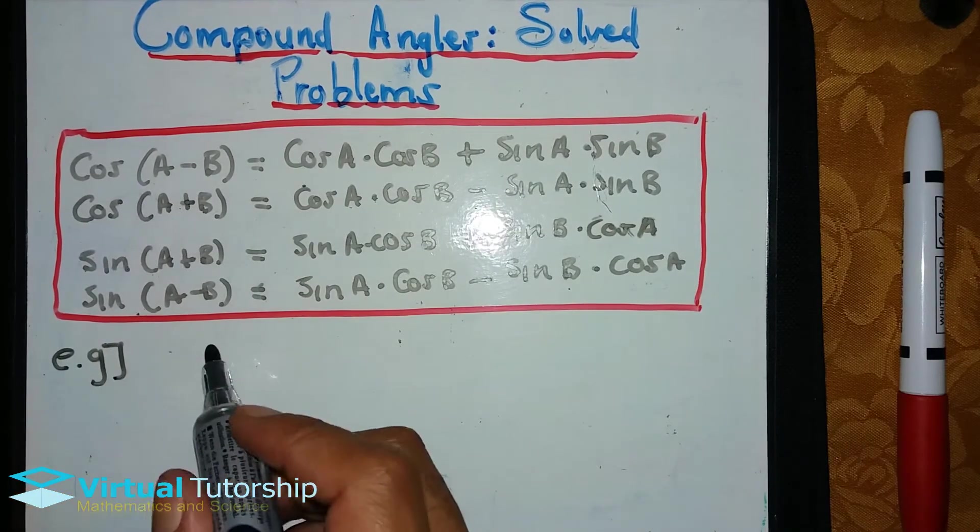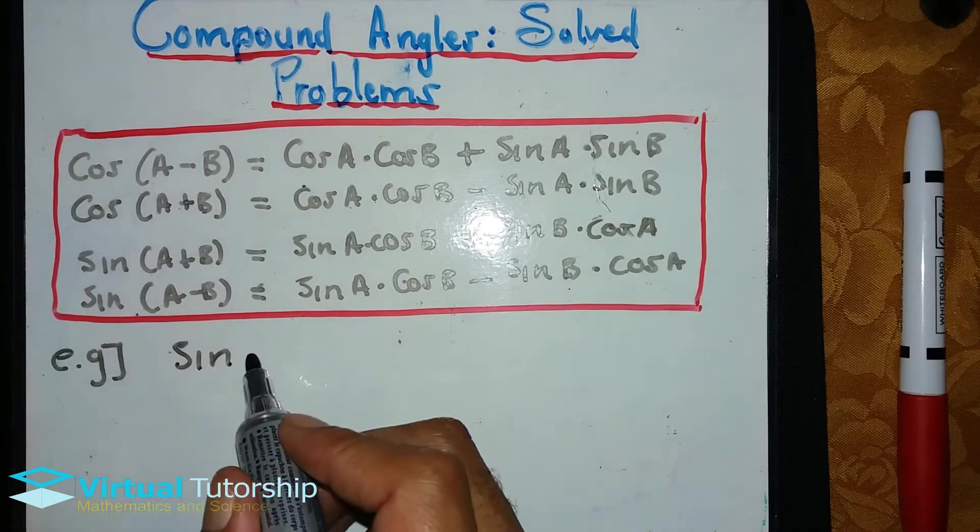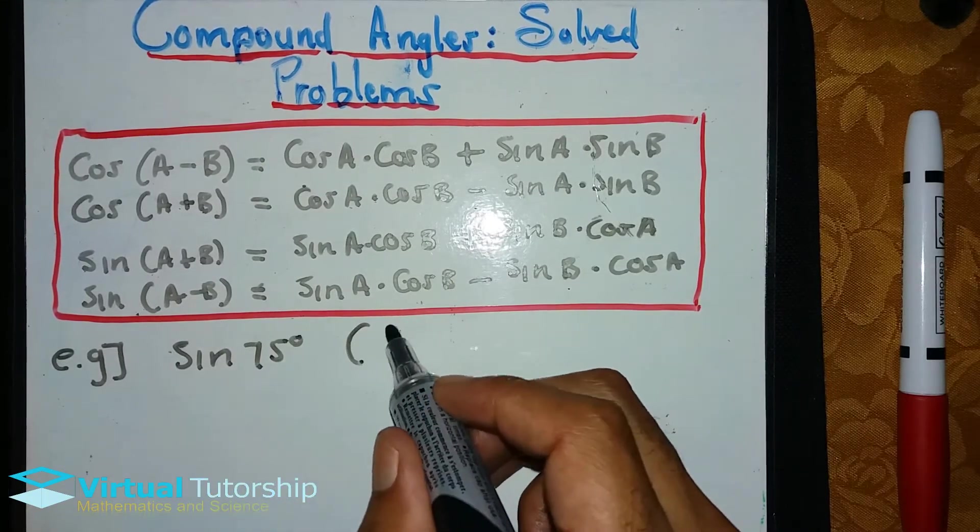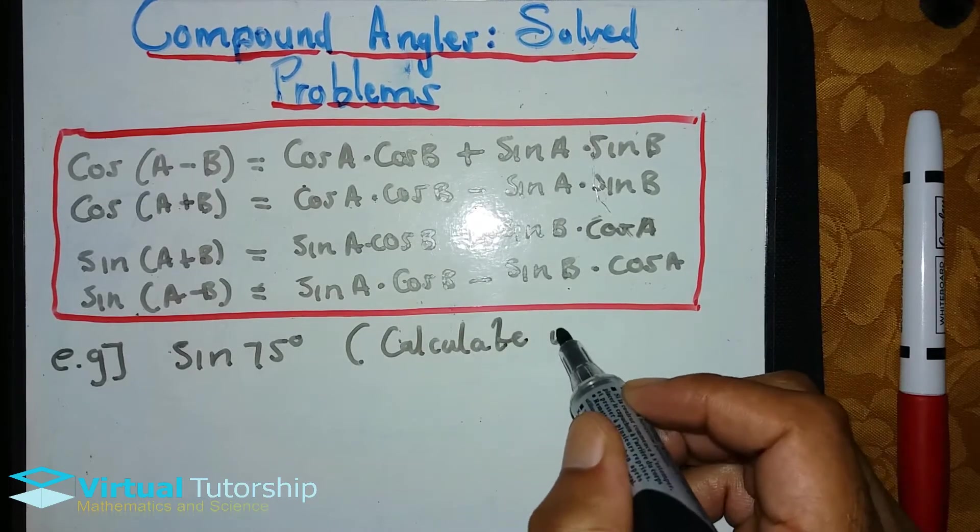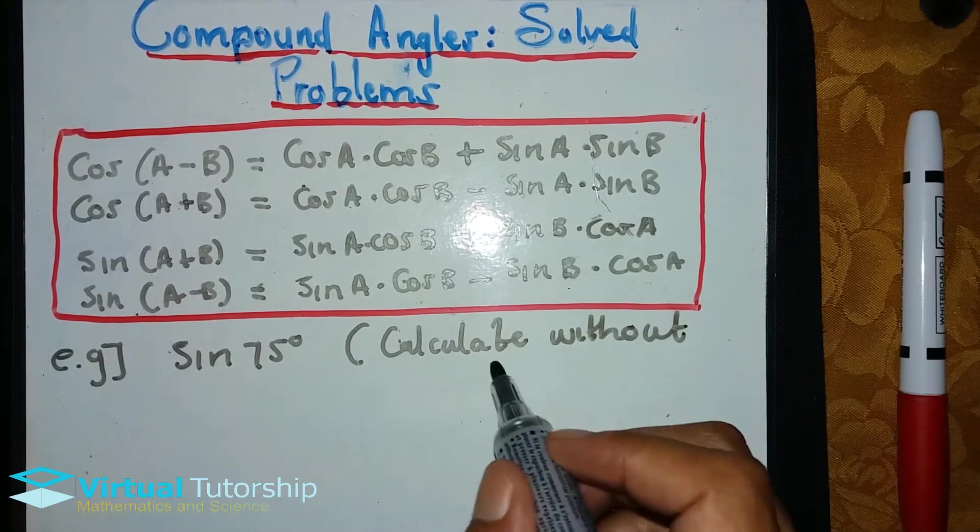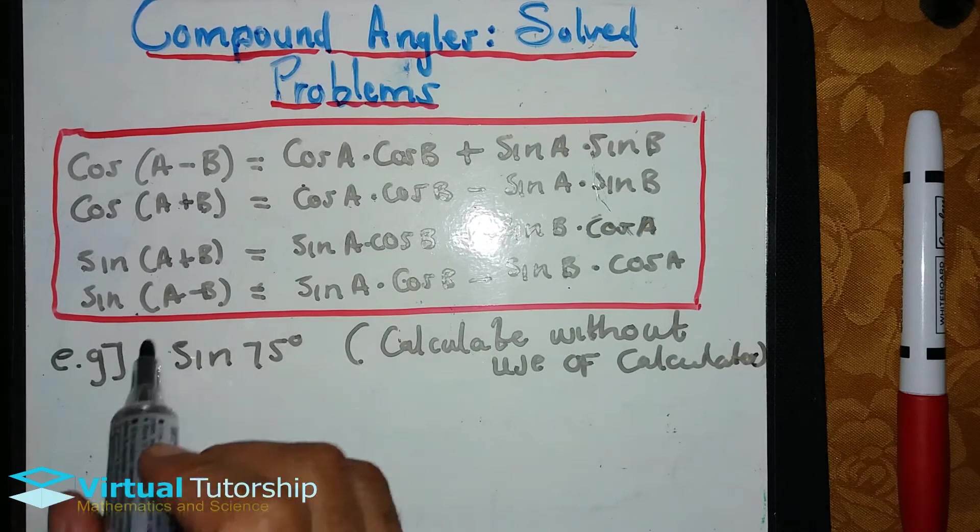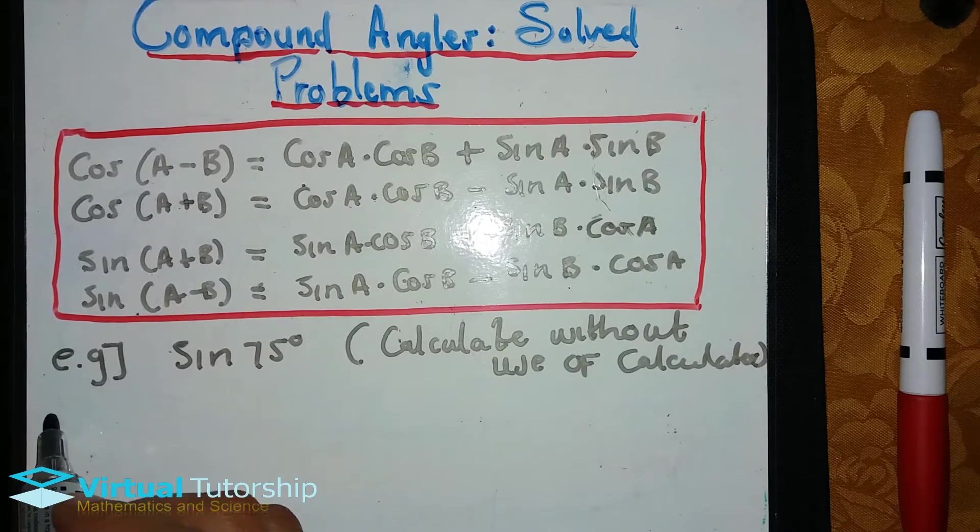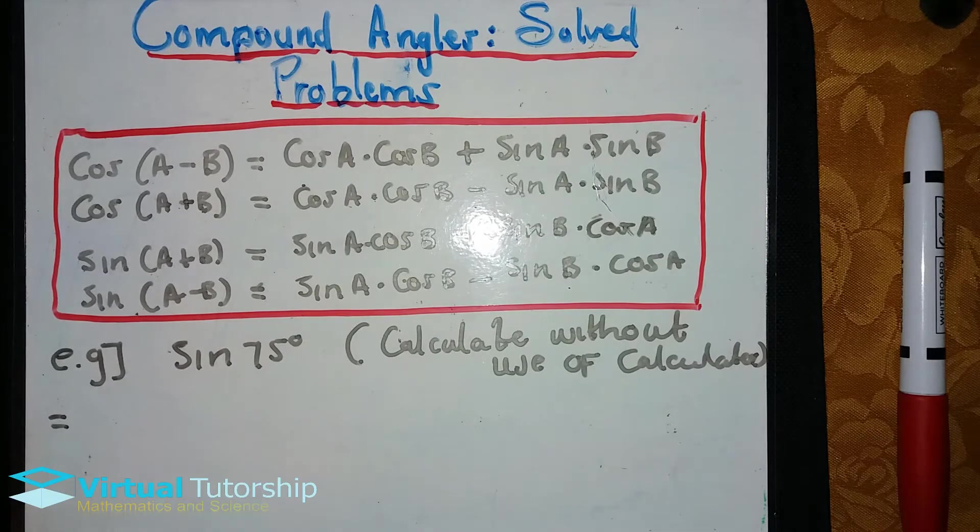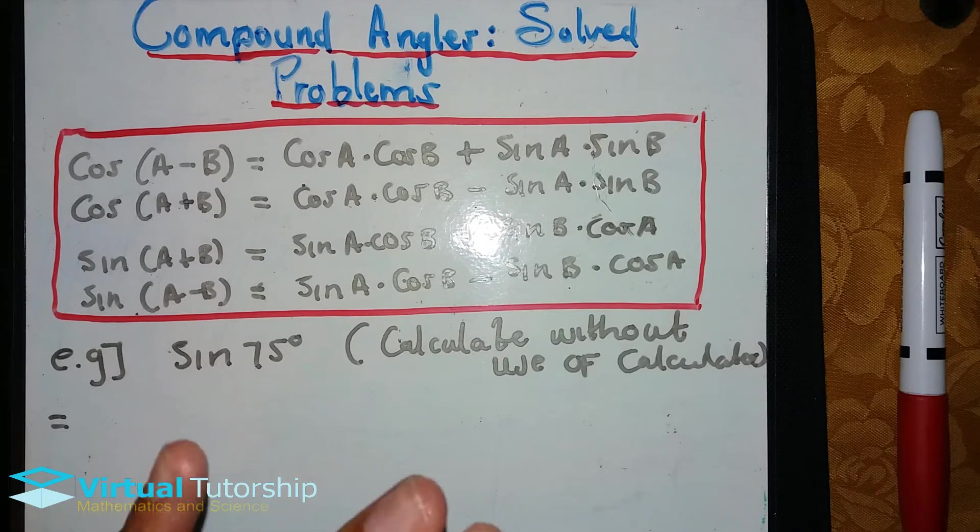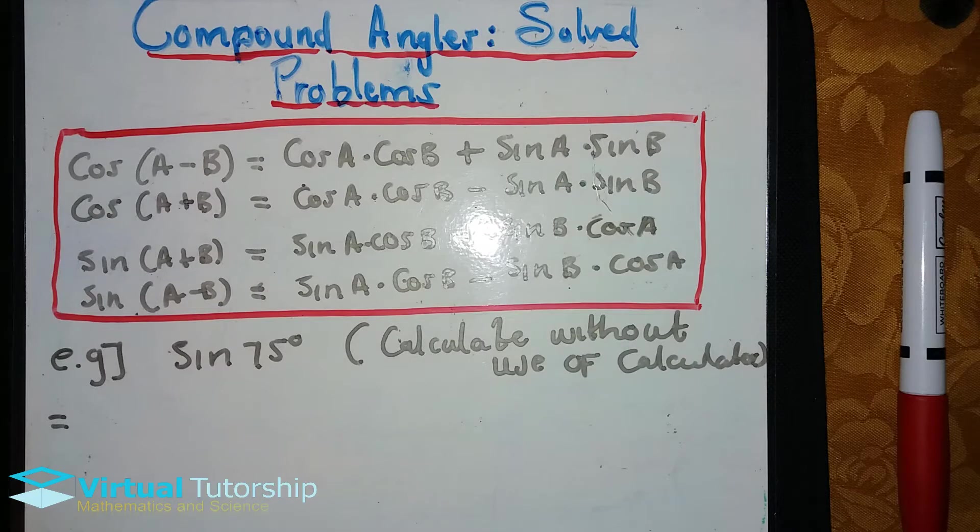Let's start with our first example. Let's say sine of 75 degrees and calculate without the use of a calculator. So we will tolerate this without the use of a calculator. Using compound angles, actually, in trigonometry, almost all of the problems are without the use of a calculator. We use special angles.